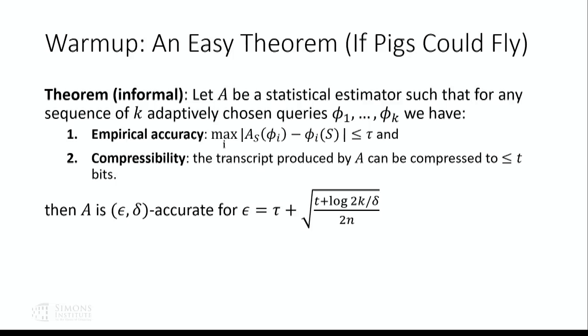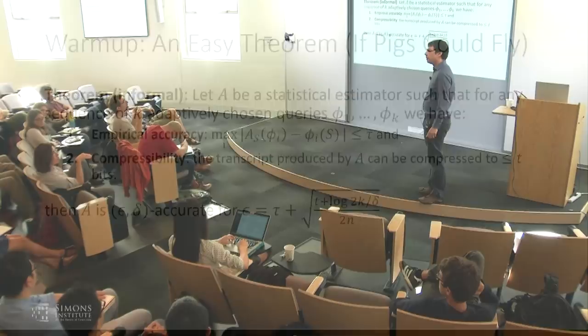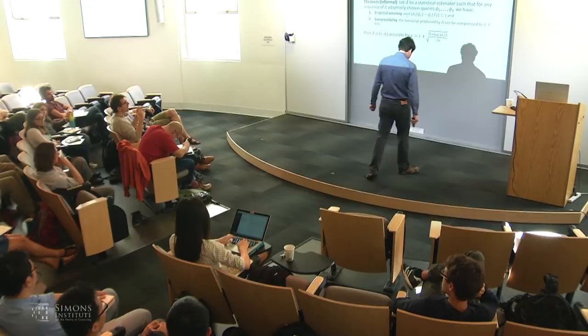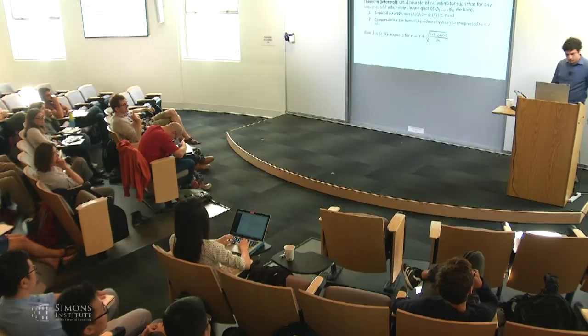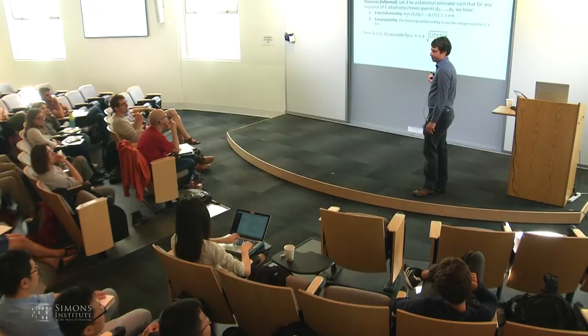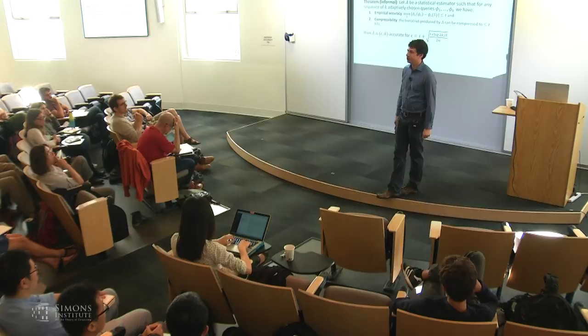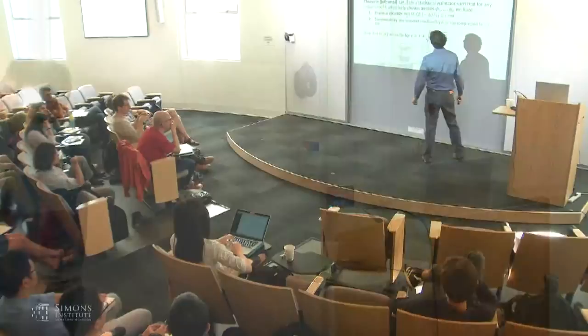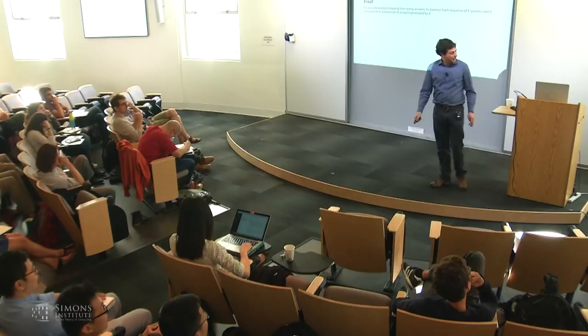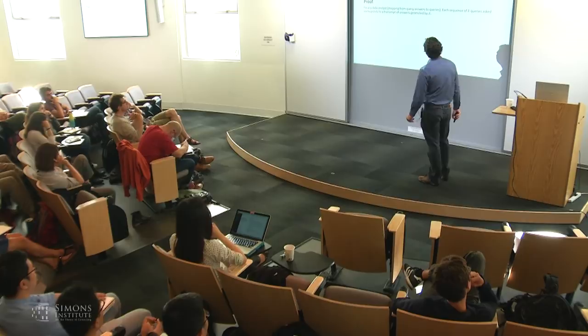There's a question about what the compressor has access to. The compressor should be the analyst — knowing his random coins and the sequence of answers given by the algorithm, the analyst should be able to perform the compression. Let's prove the theorem for a deterministic analyst, though that's not an important distinction. A deterministic data analyst is just some function mapping answers received to the next question to ask. For every sequence of k queries, there's some particular transcript of answers generated by the statistical estimator.